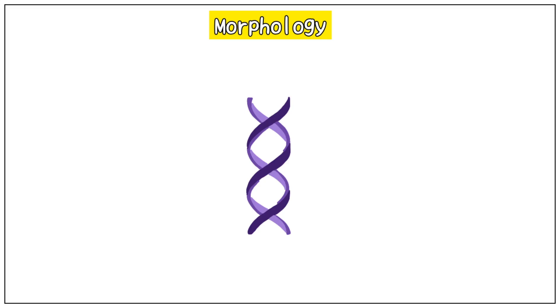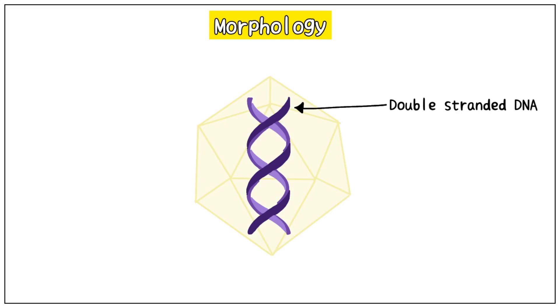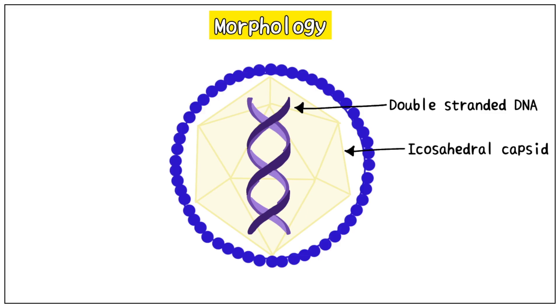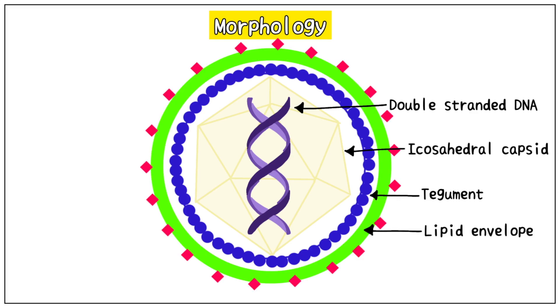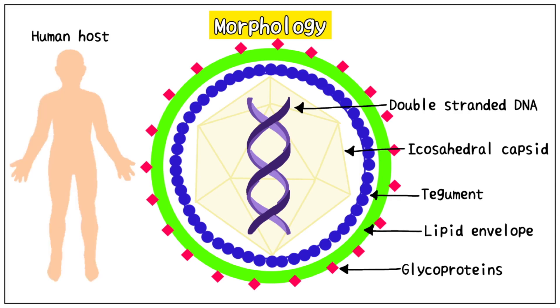Let us look at the morphology of this virus. It is large in size and is made up of double-stranded DNA enclosed in an icosahedral capsule. This capsule is contained in a layer called tegument, which is inside a lipid envelope. This envelope has surface glycoproteins that help in its spread. Remember, herpes virus cannot be picked up from inanimate objects — it spreads only through its host, humans.